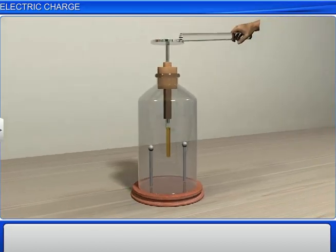If there is no change observed in the position of the gold leaves, it indicates that the glass rod is uncharged or is neutral.